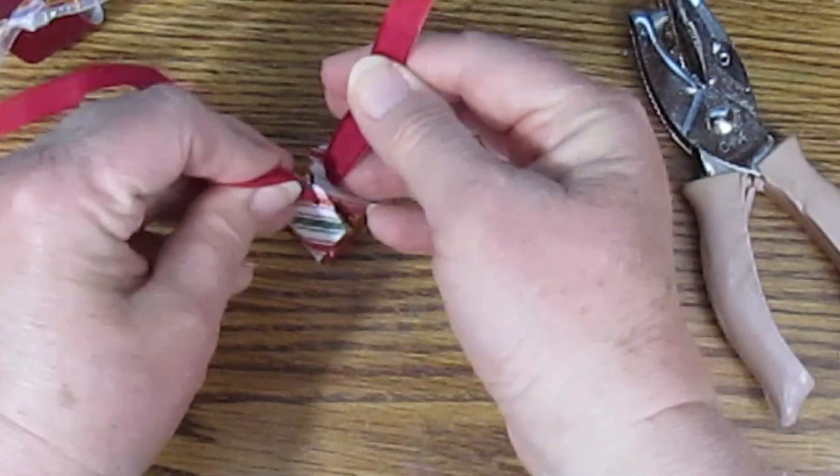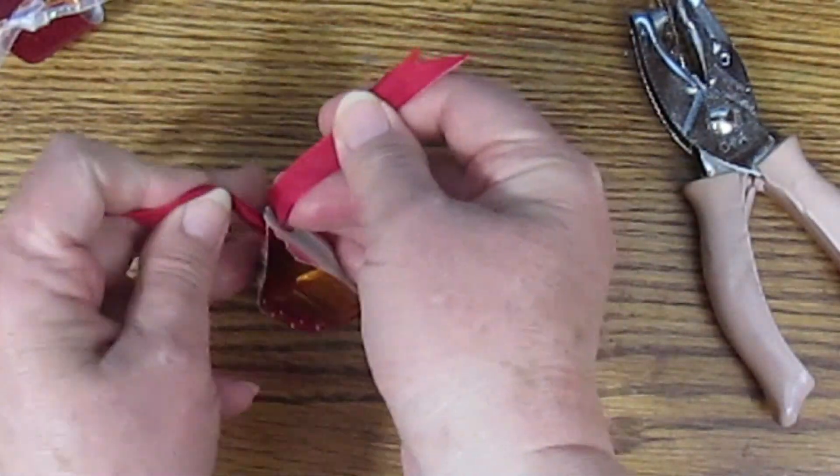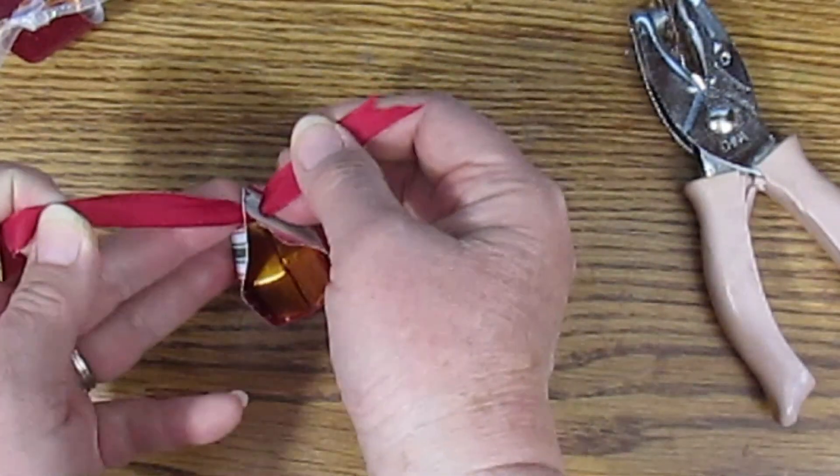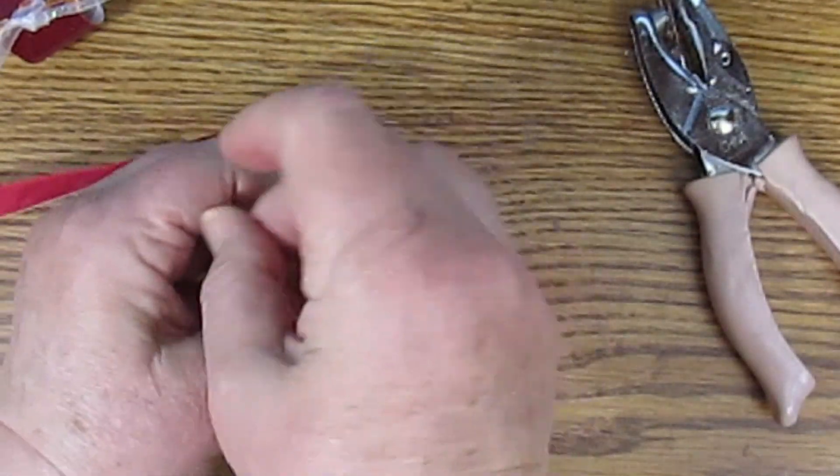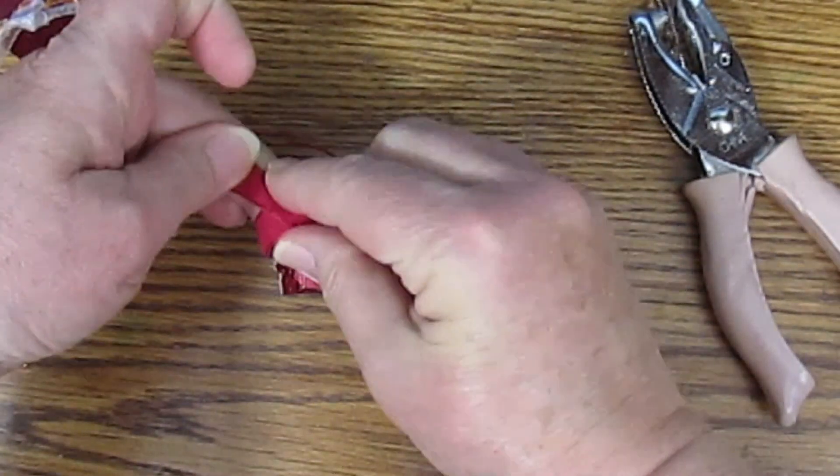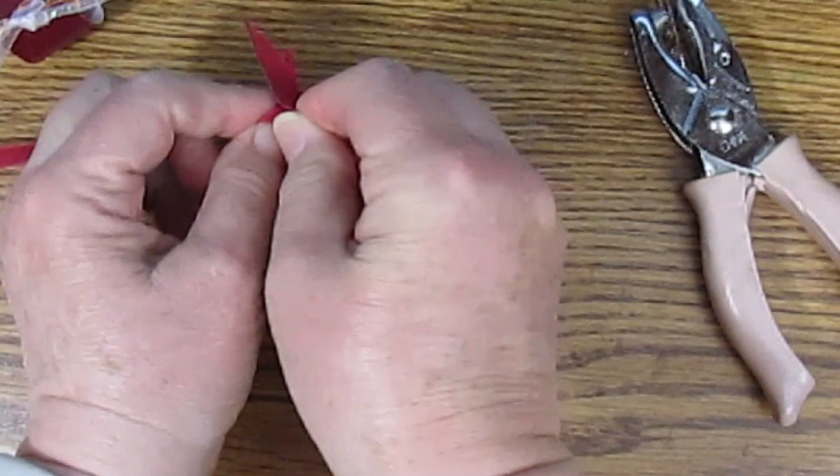You want about the same amount that you want to hang over. That's all you want sticking out the one end. And we're just going to tie this first step of the knot.